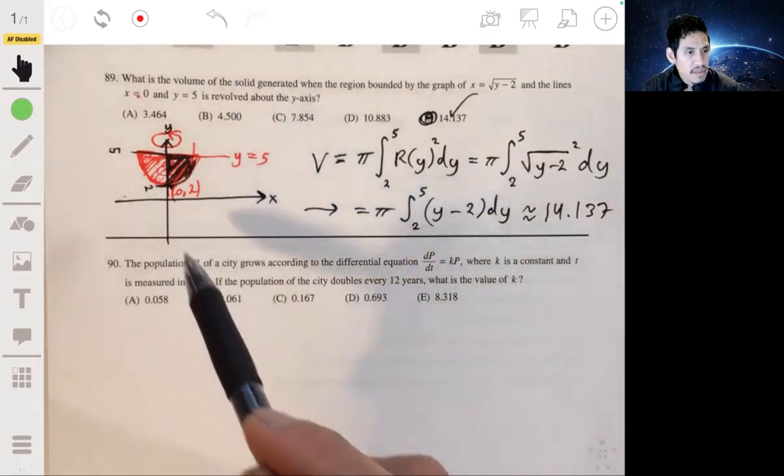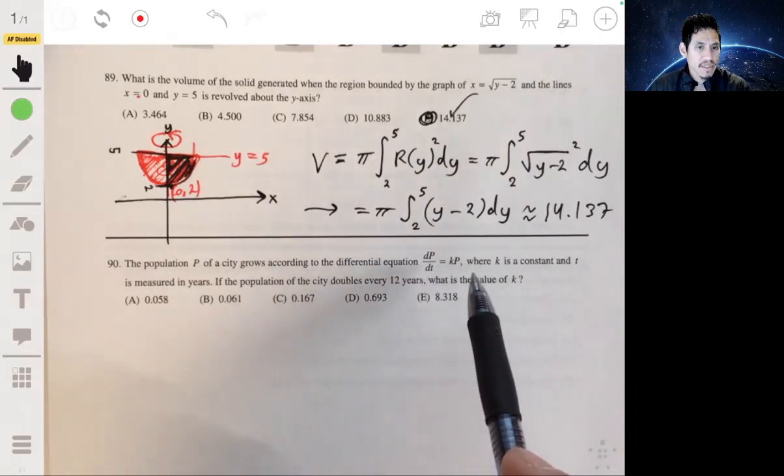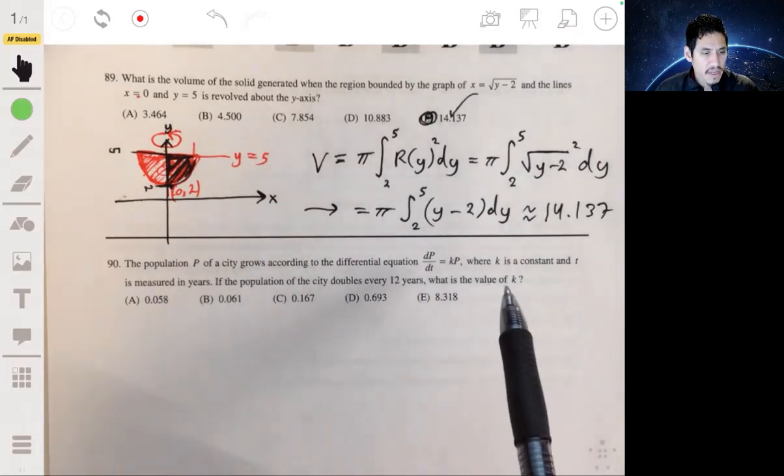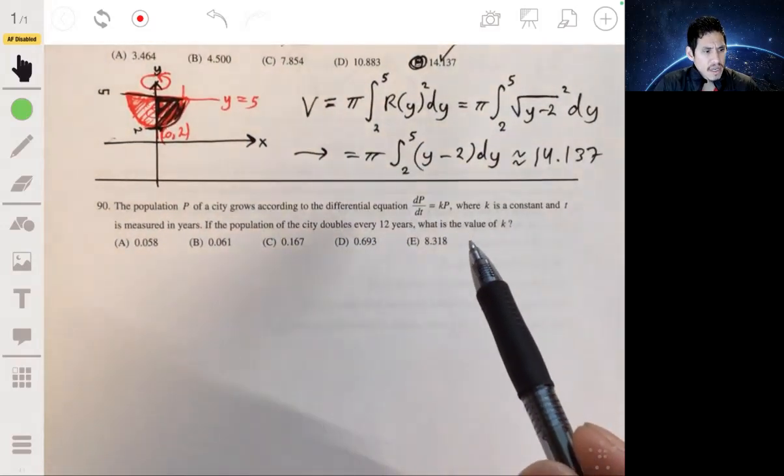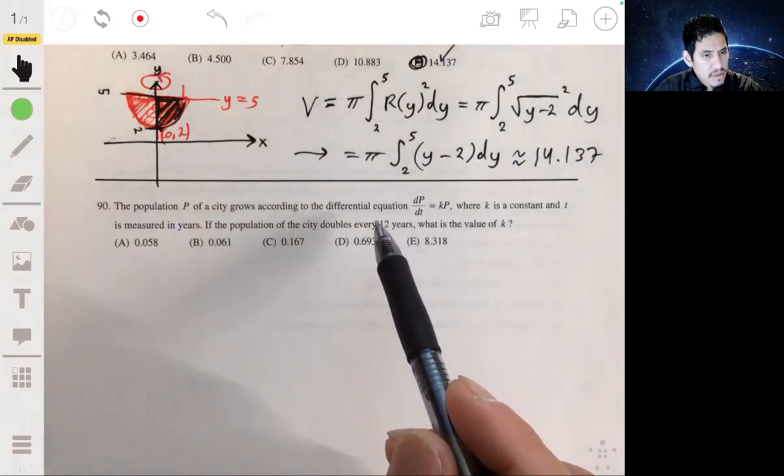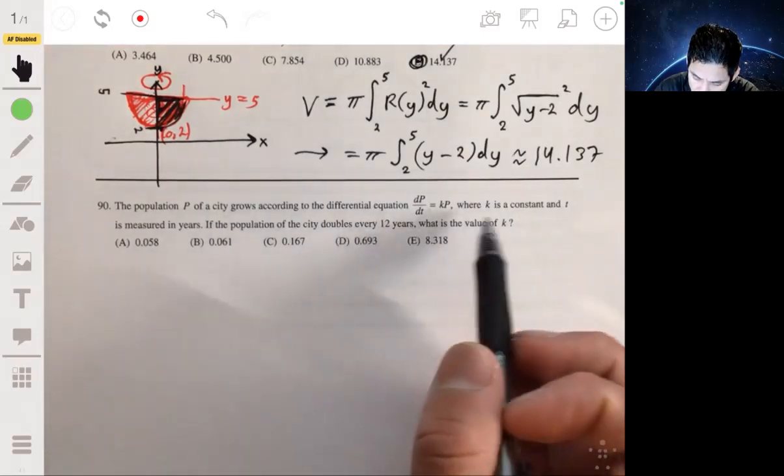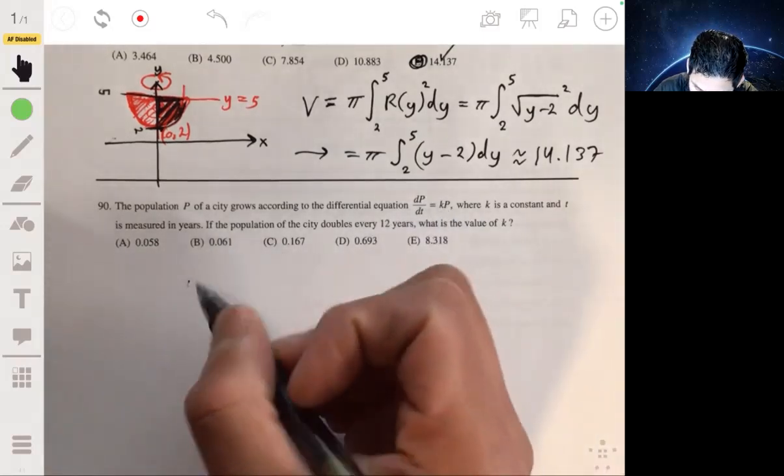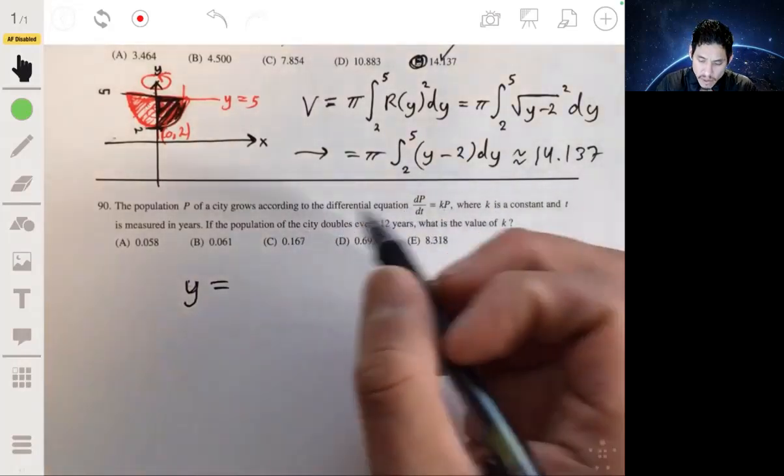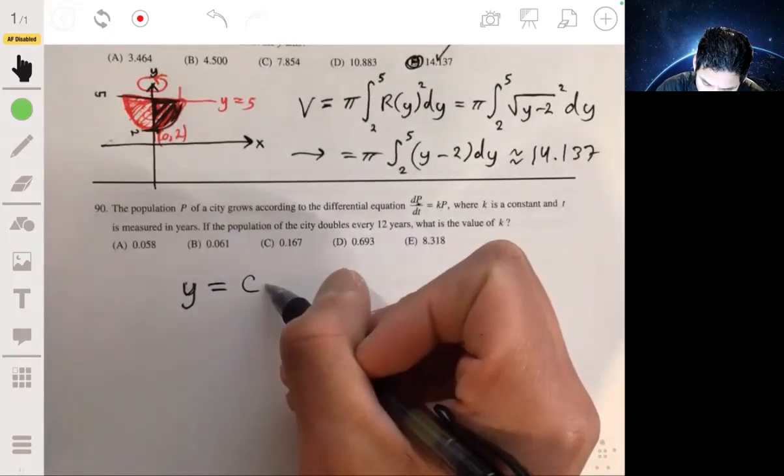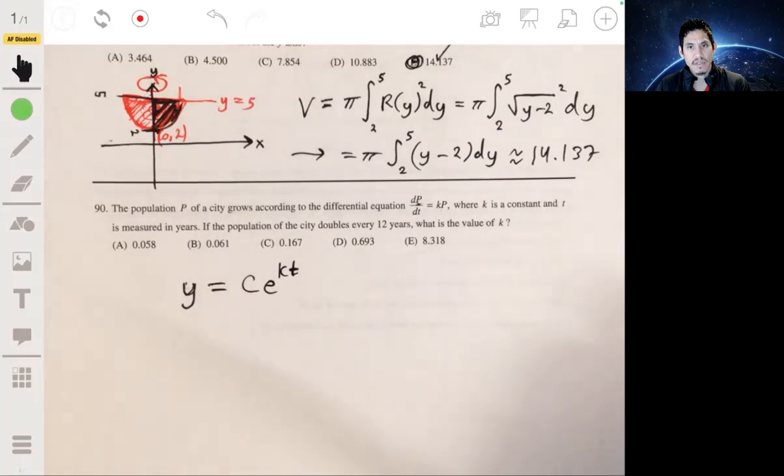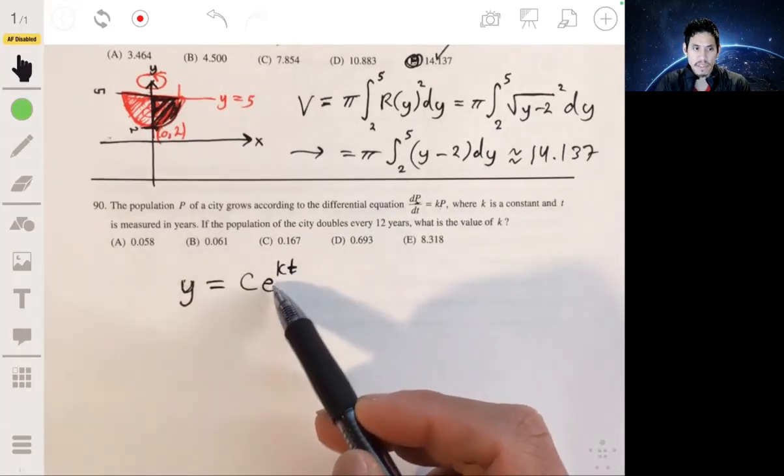Here we got the population p of a city grows according to the differential equation dp/dt equals kp, where k is a constant and t is measured in years. If the population in the city doubles every 12 years, what's the value of k? So here you can actually solve for k by just using the information of how long it takes to double. So what we can do is, we know that if you remember this from your differential equations chapter, a general solution, when you have a rate of growth that's proportional. So here you have a proportional rate of growth, the solution will be in the form y equals c e to the kt.